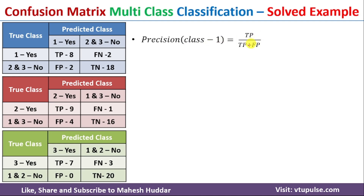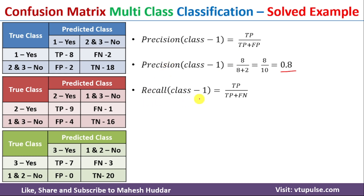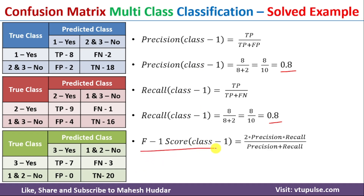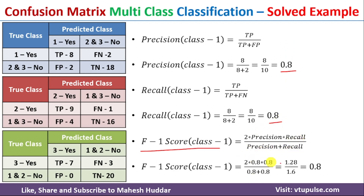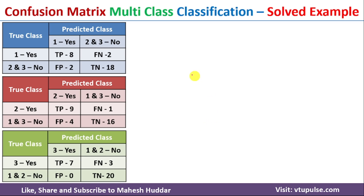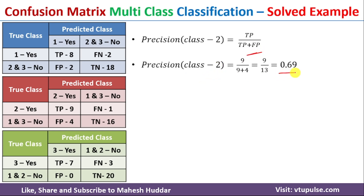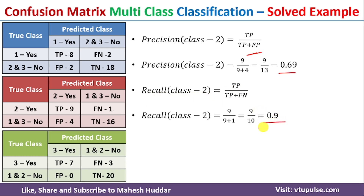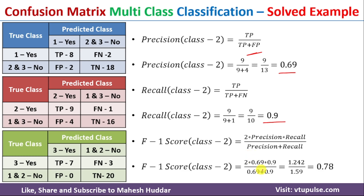Precision for class 1 equals TP / (TP + FP), giving 0.8. Recall for class 1 equals TP / (TP + FN), also giving 0.8. The F1 score for class 1 equals 2 × (precision × recall) / (precision + recall), giving 0.8. Precision for class 2 is 0.69, recall for class 2 is 0.9, and the F1 score for class 2 is 0.78.